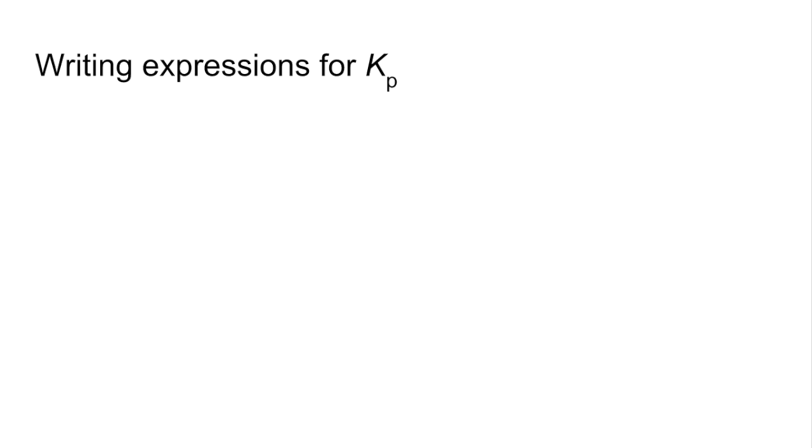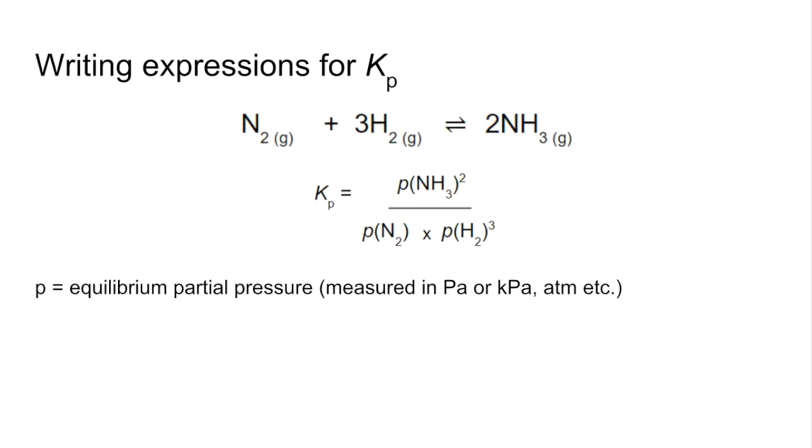So how do you write expressions for Kp? We'll use the Haber process to go through this one. So Kp is equal to the partial pressures of the products over the reactants, and we raise the partial pressure to the power of the number balancing the equation. So that little p stands for equilibrium partial pressures. They can be measured in any pressure units - Pascals, Kilopascals, Atmospheres.